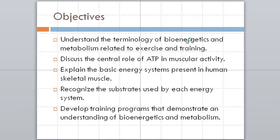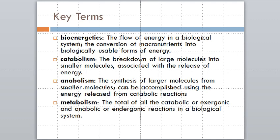We're going to talk about this terminology of bioenergetics, metabolism, and exercise training, talk about this molecule called ATP and its role, and then talk about how we manipulate exercise to manage that. Bioenergetics is the conversion of macronutrients — fat, protein, and carbohydrate — into biological usable forms of energy, which is ATP.